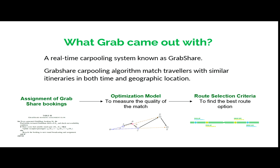There are three parts to this GrabShare algorithm: assignment of GrabShare bookings, the optimization model to measure the quality of the match, and lastly, the route selection criteria. But due to time constraints, we will only go through the first and second parts of the algorithm.